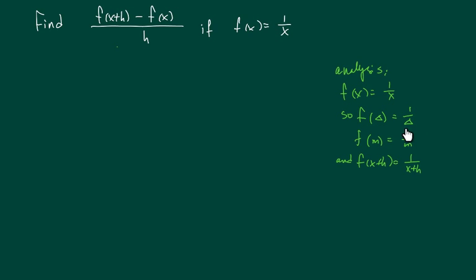If you give me m, then it's 1 over m. If you give me f(x+h), then it's 1 over (x+h). Now you understand this part, the rest is pretty easy because all we have to do is substitute and simplify.